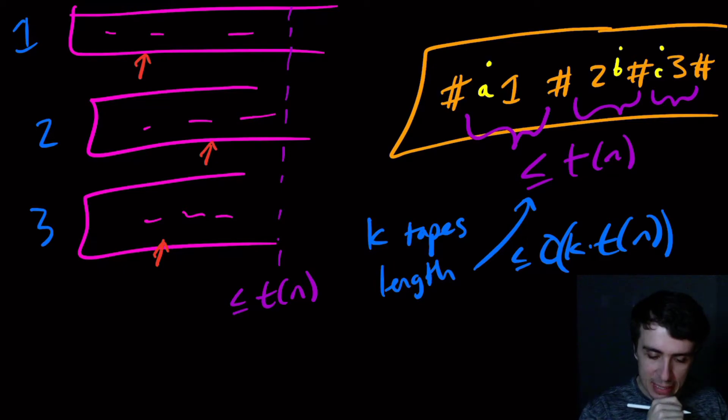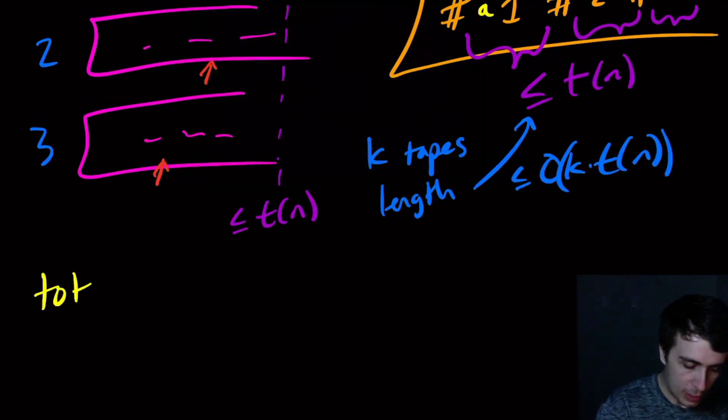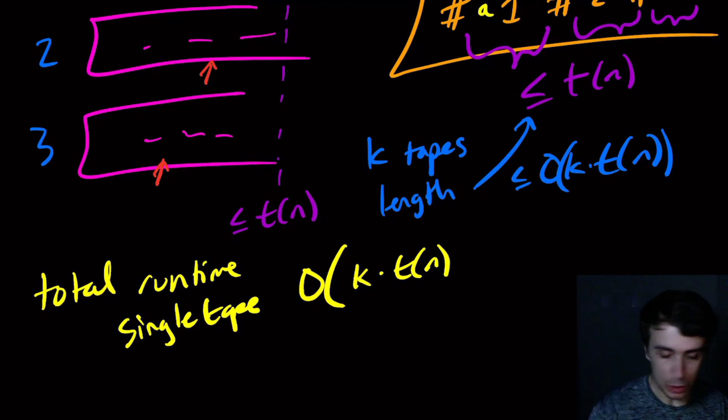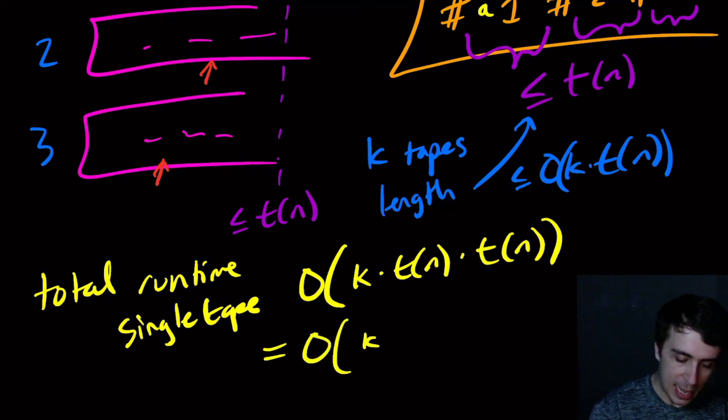So why does that give a T squared runtime? Well, that means here we have T of n steps, and the amount of time for each one of them over here is at most k times T of n. So the total runtime of the single tape guy is going to be big O of k times T of n, which is how long the tape actually is for the single tape one, times T of n, because that's the number of transitions the multi-tape one did. And that is equal to k times T squared of n.